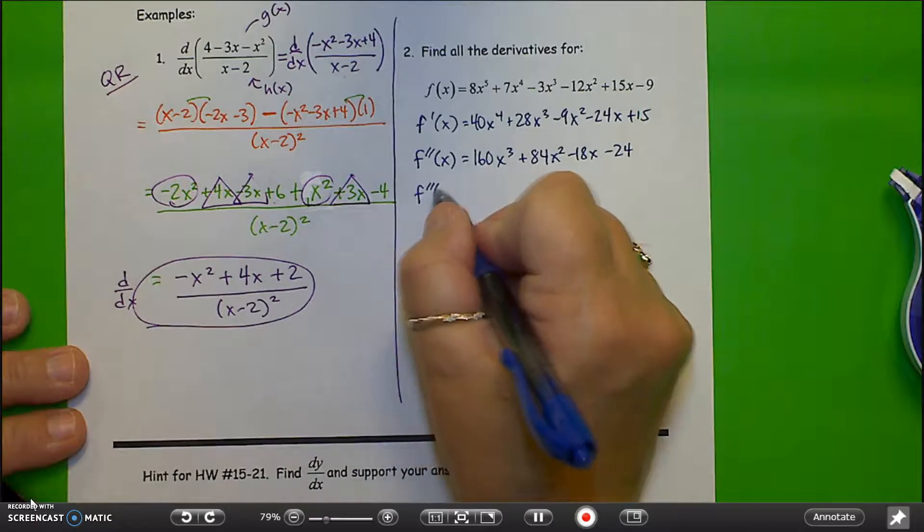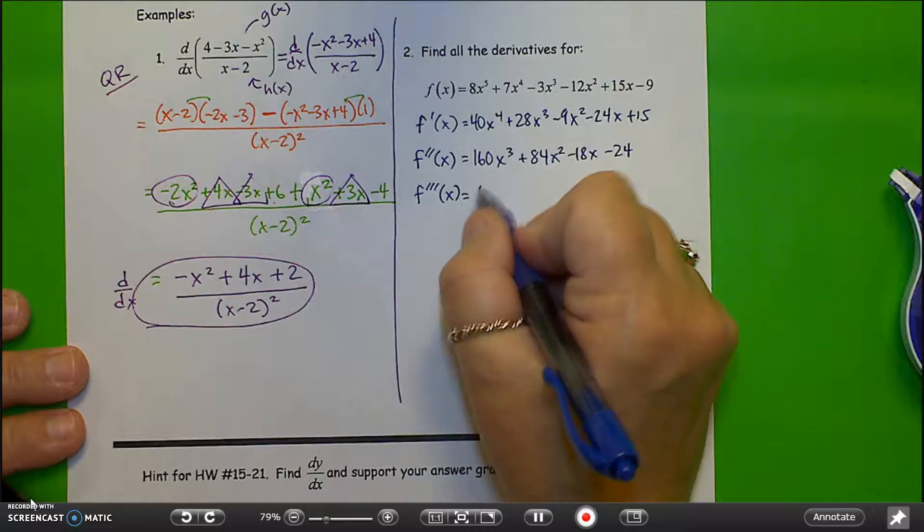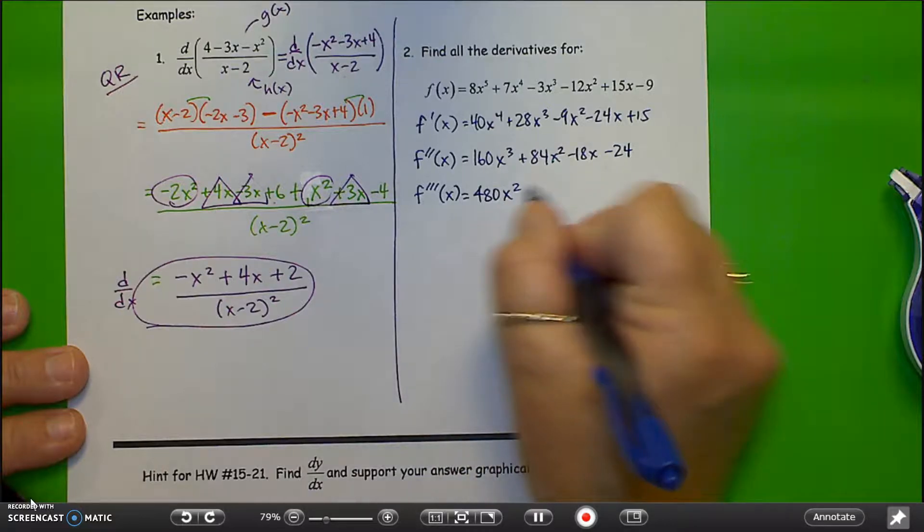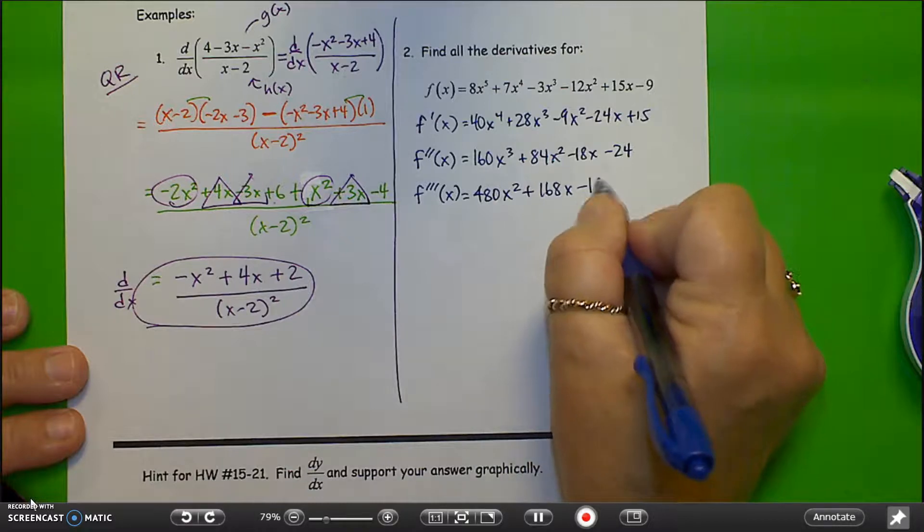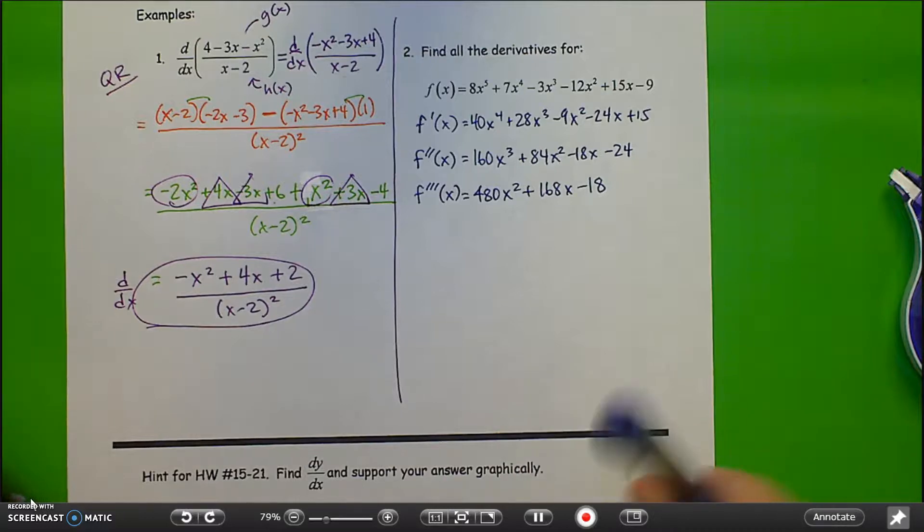Third derivative. f triple prime, equals, this is 480x squared, plus, 168x, minus 18. That one's gone. Fourth derivative.